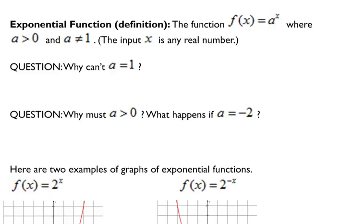First question, why can't a equal 1? If a were 1, we would get the same answer over and over again, because 1 to any power is 1. So we wouldn't have an exponential function, that would be a constant function. 1 to the x is always 1, so that would be constant, not exponential.